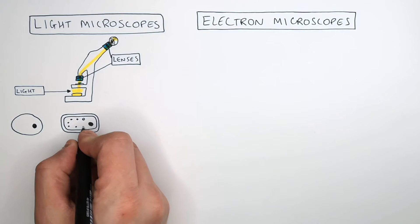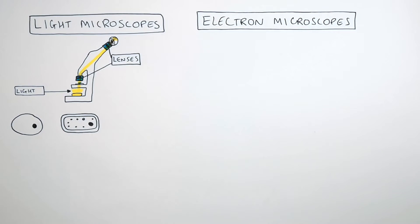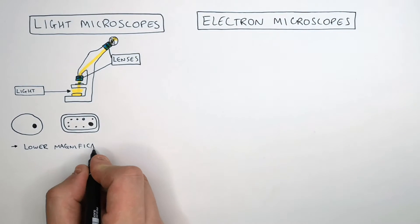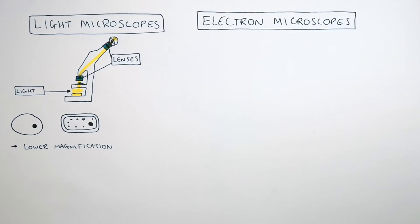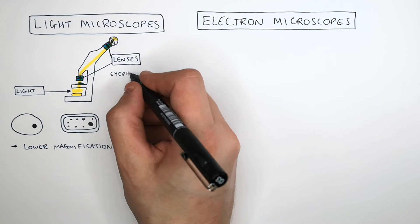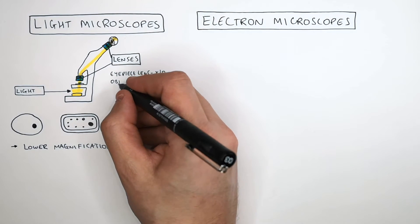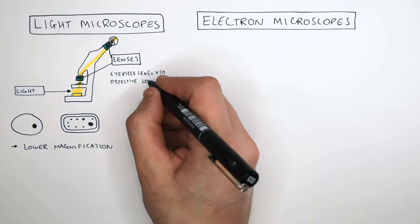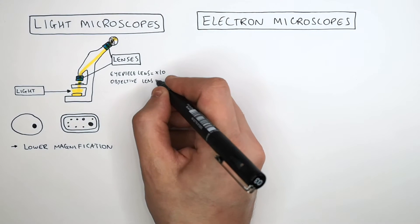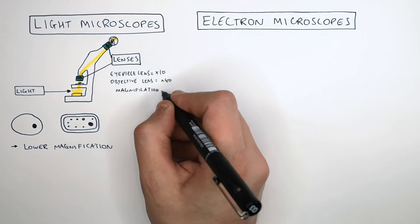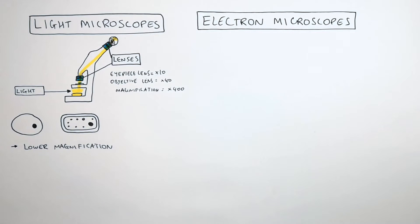You can't see ribosomes using a light microscope. Light microscopes have a lower magnification than electron microscopes — for example, if an eyepiece lens has a magnification of ×10 and the objective lens has a magnification of ×40, you get an overall magnification of ×400, which is lower than the magnification on an electron microscope.